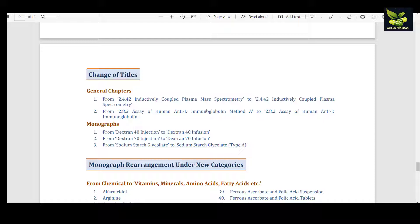Here the word 'mass' is removed. In the second example, you can see 2.8.2 assay of human anti-D immunoglobulin method A has been changed to 2.8.2 assay of human anti-D immunoglobulin - here method A has been removed.